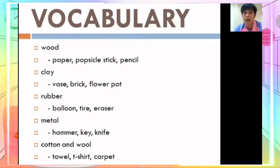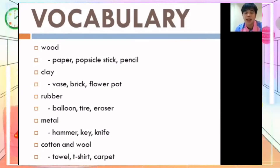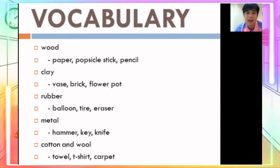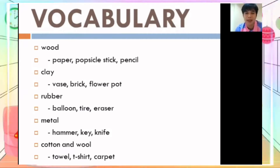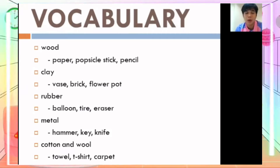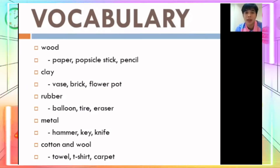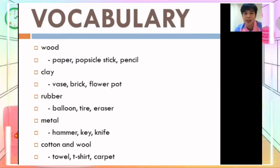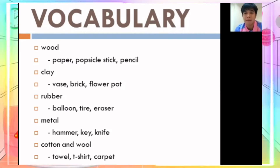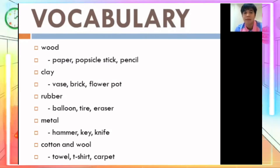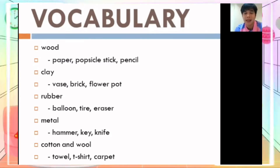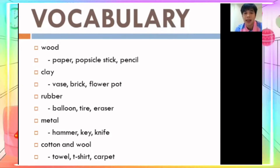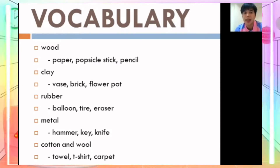For our vocabulary words, let's read and spell. Wood — W, O, O, D — wood. We have paper, popsicle stick, and pencil. Next is clay — C, L, A, Y — clay. We have face brick and flower pot.